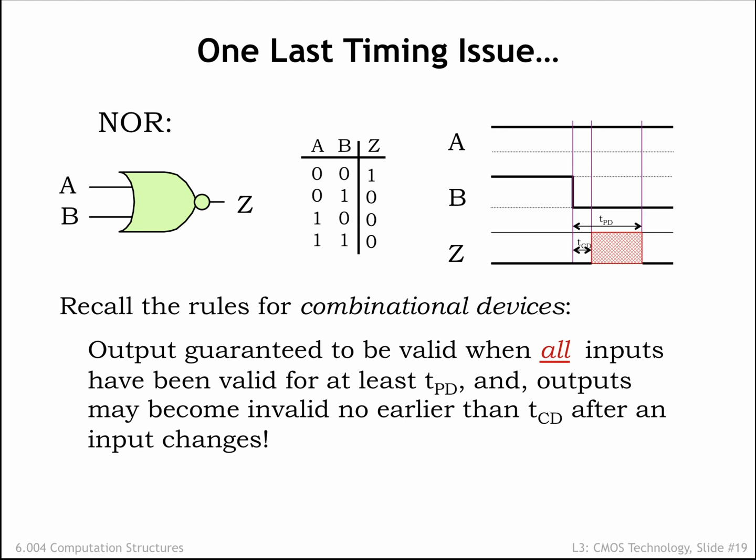But, in general, we can't assume anything about the value of Z in the interval between TCD and TPD. Z could have any behavior it wants in that interval, and the device would still be a legitimate combinational device.